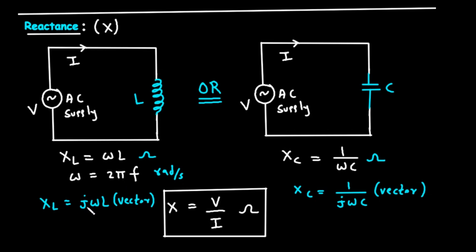Below this, you see another formula: X sub L equals j times omega times L. The j here is the imaginary unit, the square root of negative 1. In electronics, we use j instead of i to avoid confusion with the symbol for current. This j is a mathematical tool that tells us something very important: